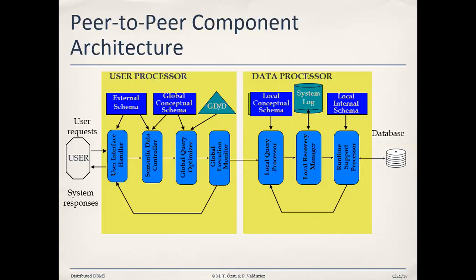The task of the UI handler is to receive the request and perform checks on it. First, it performs a syntactical check — for example, whether the query is based on SQL syntax. Second, it evaluates the query in terms of semantics. The user interface handler is linked with the external schema, because the external schema defines the user view, telling us what type of requirements and information users may generate.